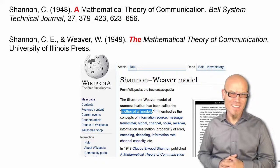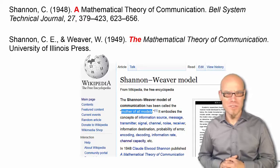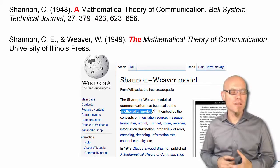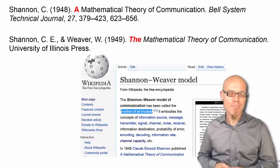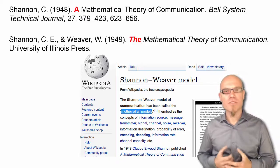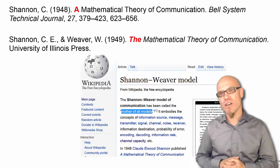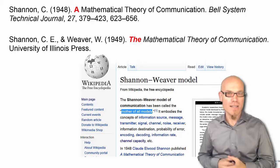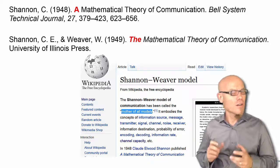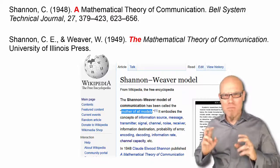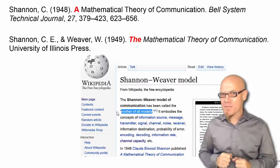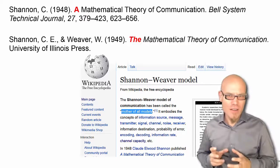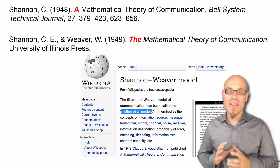Unfortunately, in the social sciences, there exists a lot of confusion with regard to the contributions of Shannon and the usefulness of his mathematical theory of communication. For example, social communication scholars usually refer to Shannon's information theory in general as the Shannon-Weaver model. They call it the mother of all models, but the fact that they attribute it to both Shannon and Weaver already shows that they have never read it.